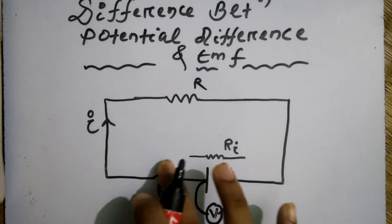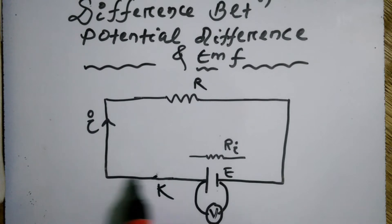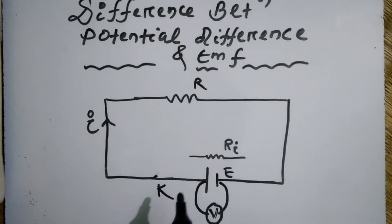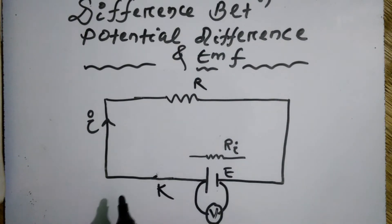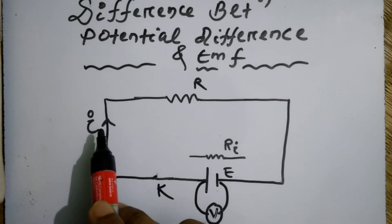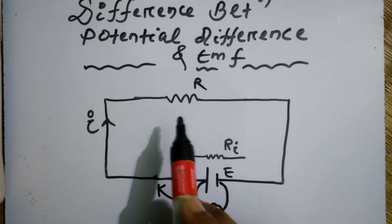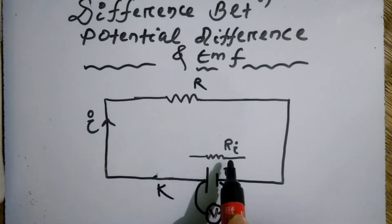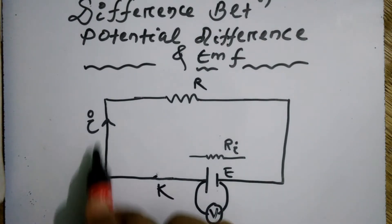Now when I close the key, a current I will flow through the circuit. At that time, a voltage drop will occur across the internal resistance due to the current I. This drop equals I times r (internal resistance). There is also a voltage drop across the load resistance, but here I am focusing on the internal resistance.